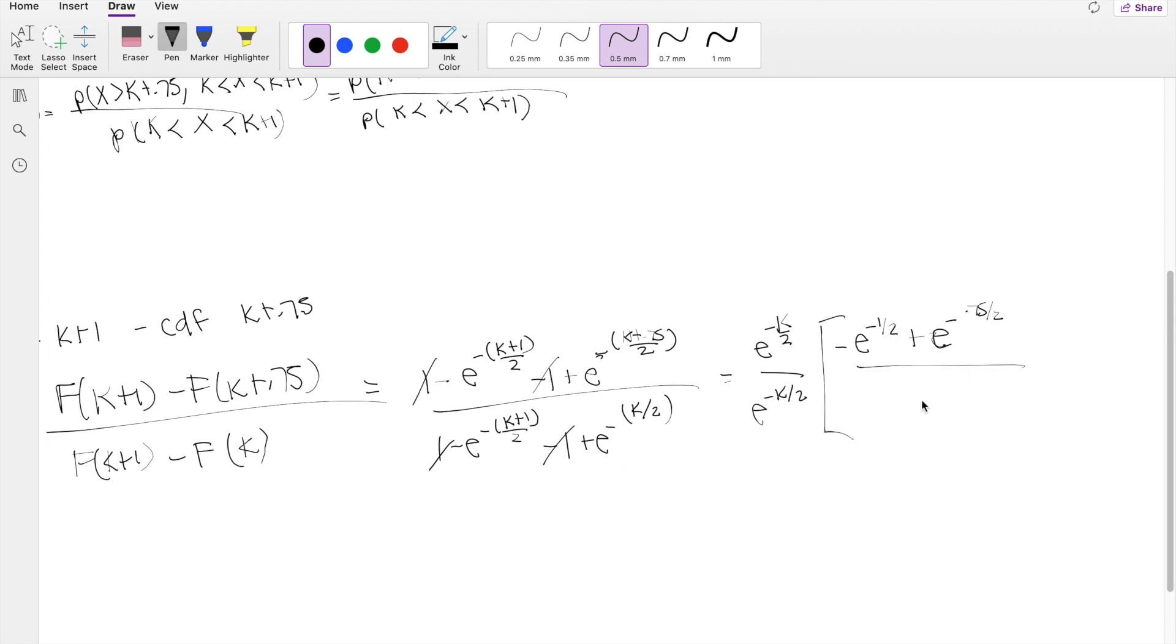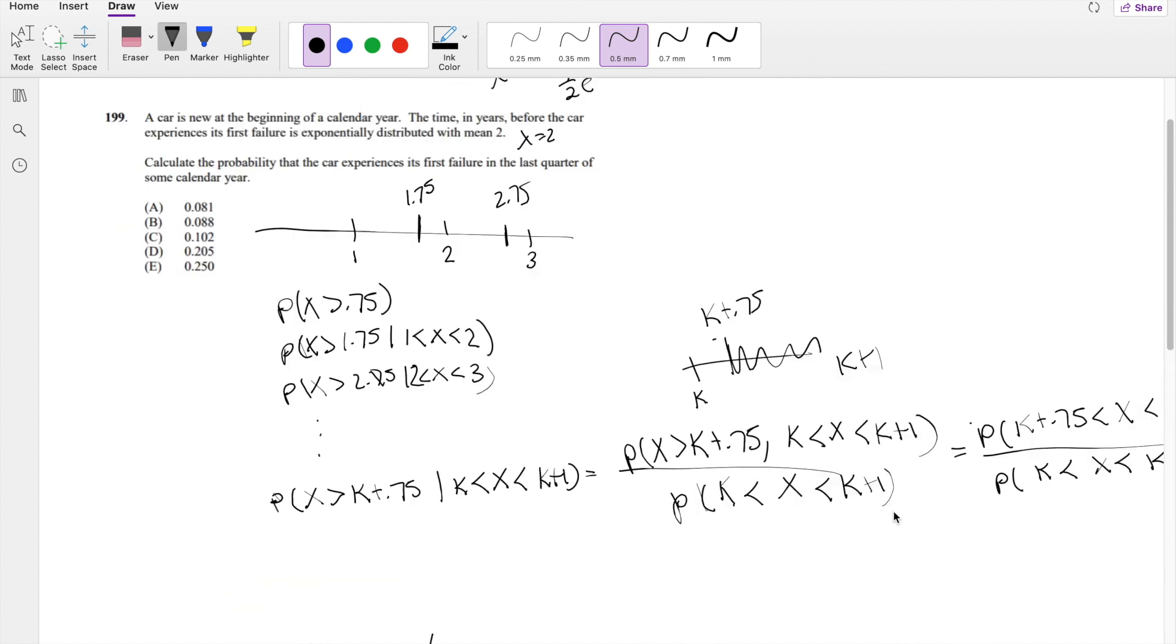Divided by, in the denominator, you're going to get negative e to the negative 1 half as well, plus just 1. So these just cancel out. So you end up getting approximately equal to 0.2052, which is our answer D.